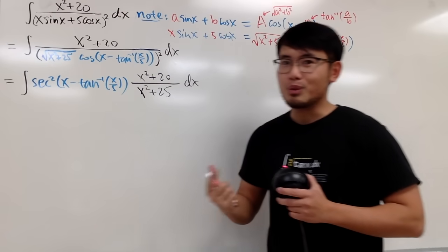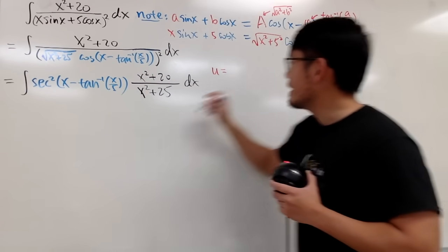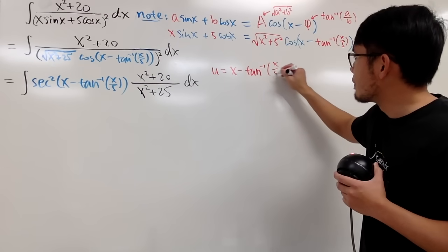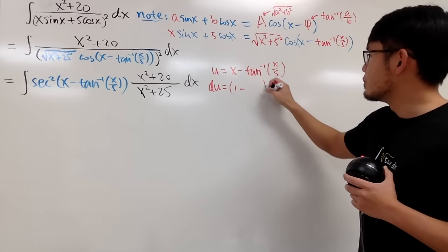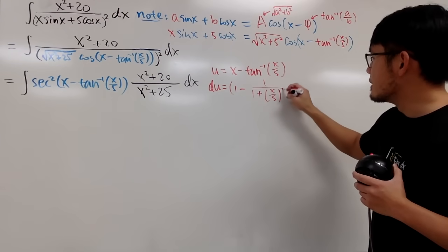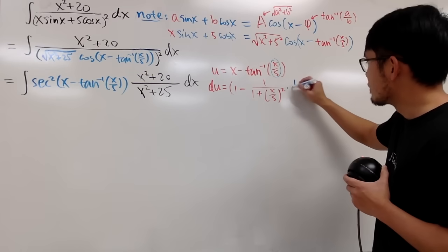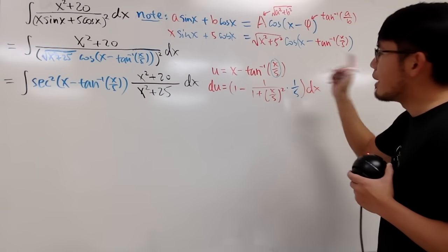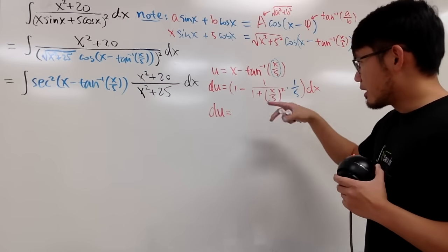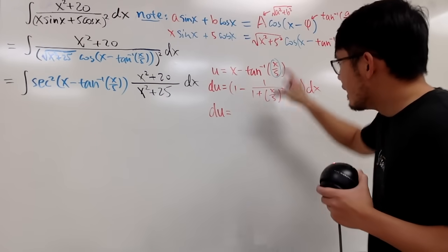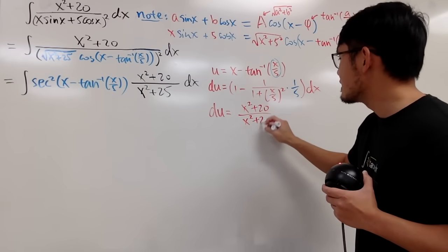We have secant² of a complex inside, so let's try u-substitution. Let u = x − arctan(x/5). Differentiating both sides gives du = 1 minus the derivative of arctan(x/5), which is 1/(1 + (x/5)²) times (1/5) by the chain rule. Working out the algebra — squaring, clearing the complex fraction — this turns out to be exactly (x² + 25)/(x² + 25) dx... wait, (x² + 20)/(x² + 25) dx.